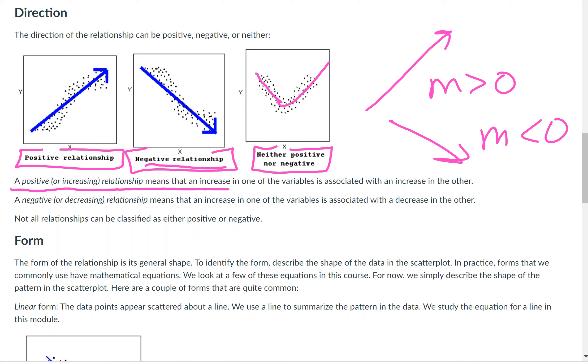A positive or increasing relationship means that the increase in one variable is associated with an increase in the other. That's what you see here. As you get larger x values, you're going to the right, you're also getting larger y values, or you're going up. A negative or decreasing relationship means that an increase in one of the variables is associated with a decrease in the other. So as I go to the right, the values of my explanatory variable are getting larger, but the values of my response variable are going down as I look to the right. The points are, as I go to the right, the points are getting lower and lower. That means the response variable value is smaller.